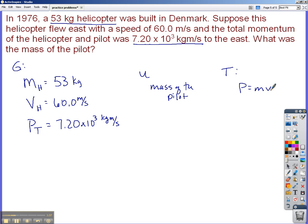What I'm going to do is I'm going to do this in a different color now so that you can see the difference between my solution and the things that I know. So the mass of the helicopter at 53 kilograms times the speed of the helicopter at 60.0 meters per second gives us a momentum of the helicopter of 3,180 kilogram meters per second.